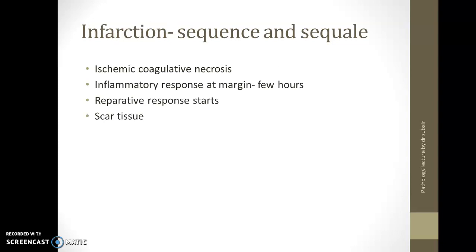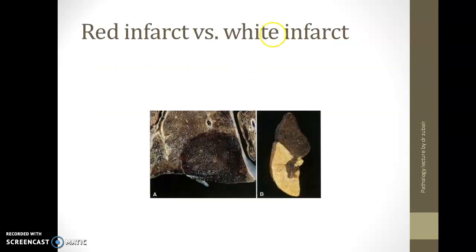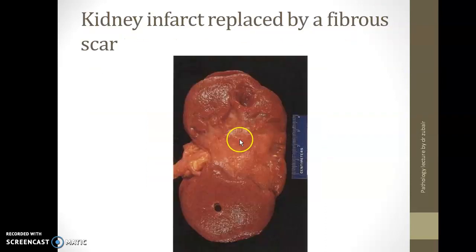What is the sequel — how does the infarct progress? First of all, there will be ischemic coagulative necrosis with inflammatory response at the margin lasting for a few hours. Then there is a reparative response, and at the end of it you will have scar tissue. This is how a red infarct will look, and this is how a white infarct will look. The infarct will be replaced by fibrous scar, as seen in this kidney.